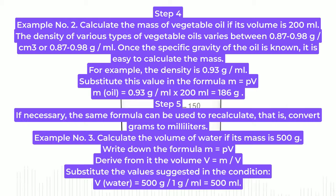Once the specific gravity of the oil is known, it is easy to calculate the mass. For example, the density is 0.93 g/ml. Substitute this value in the formula m = pV: m(oil) = 0.93 g/ml × 200 ml = 186 g.